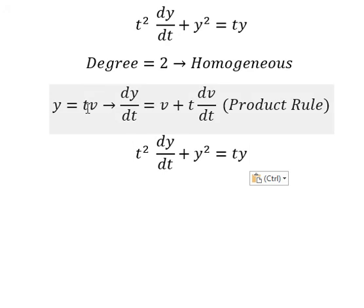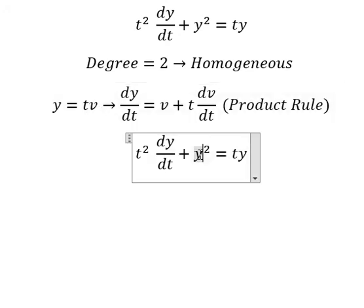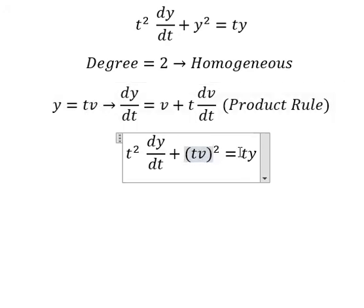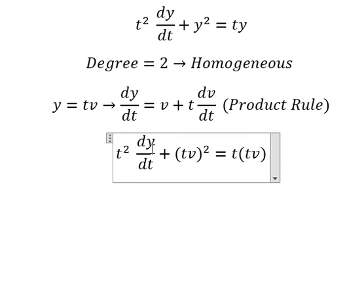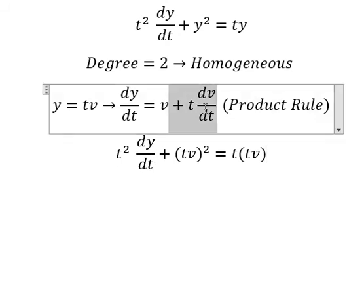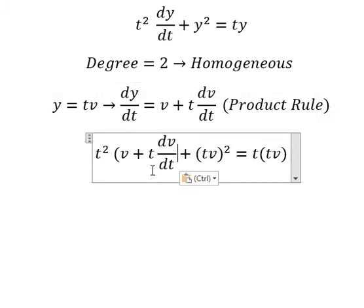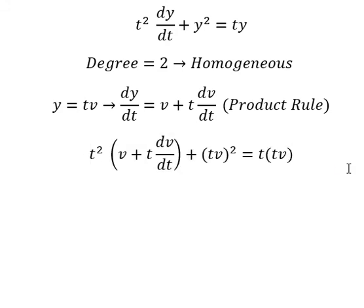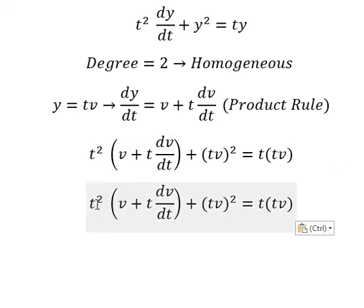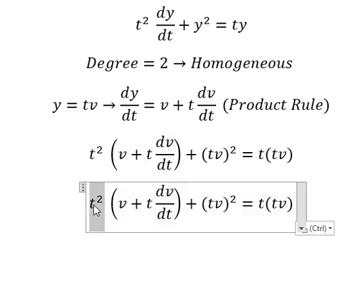Now we need to change y into tv and substitute dy/dt with our derivative expression. The equation becomes t²(v + t(dv/dt)) + (tv)² = t(tv). Now we need to simplify this for both sides.